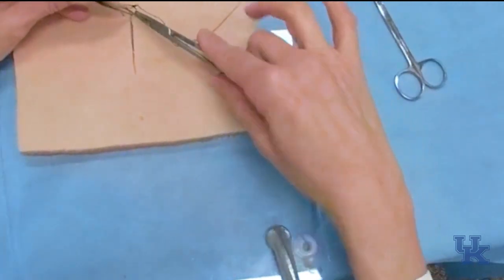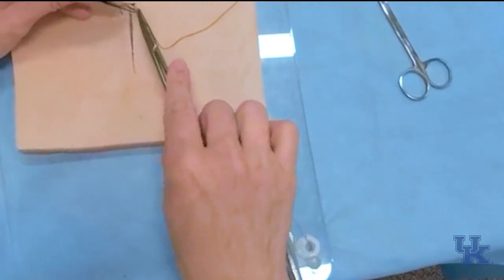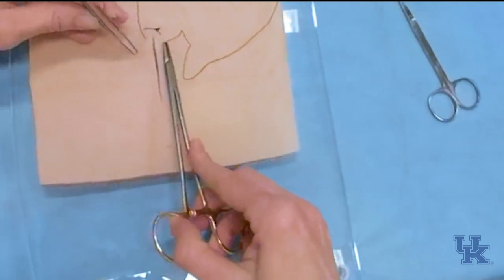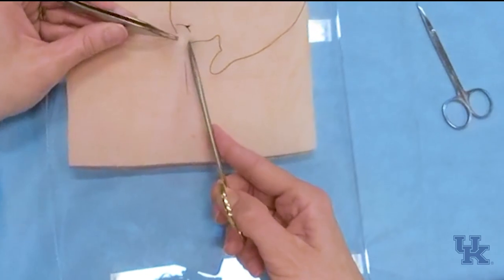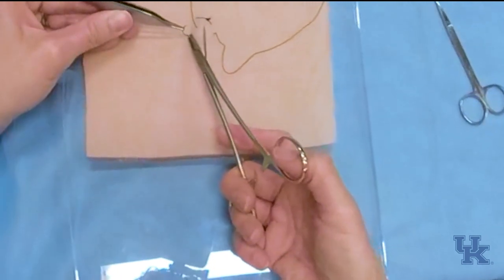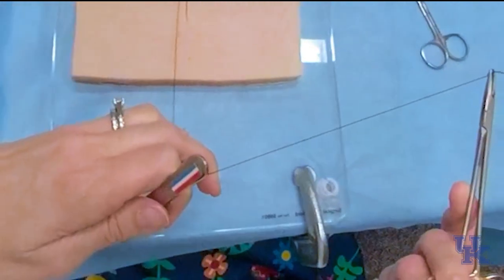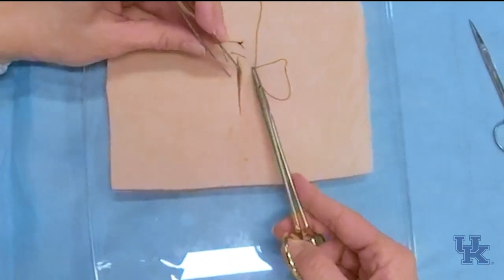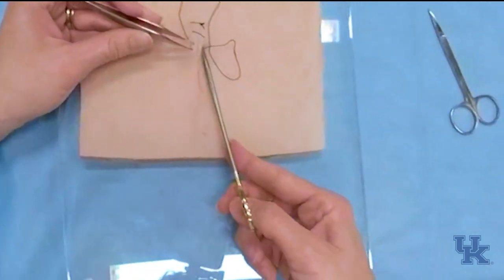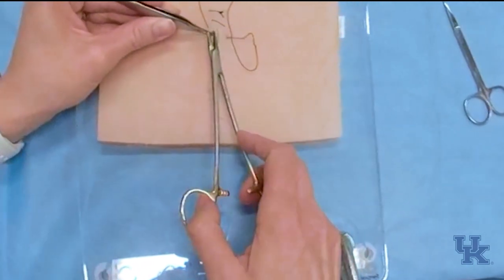And if you see my hand here, I've grabbed the instrument differently to put that stitch in, and sometimes that can be helpful. Sometimes your fingers in the holes when you're doing that side can be a little bit more difficult. You can do this, but you see my wrist and everything is rotated.